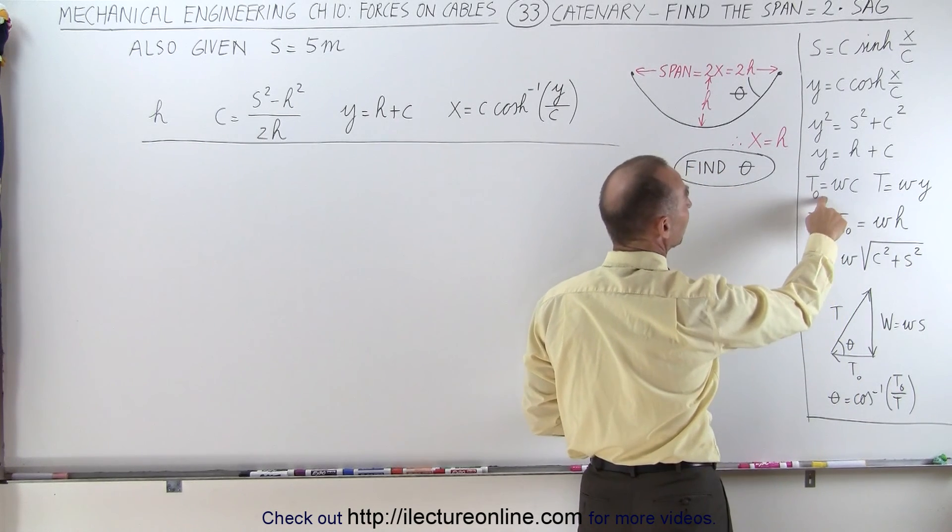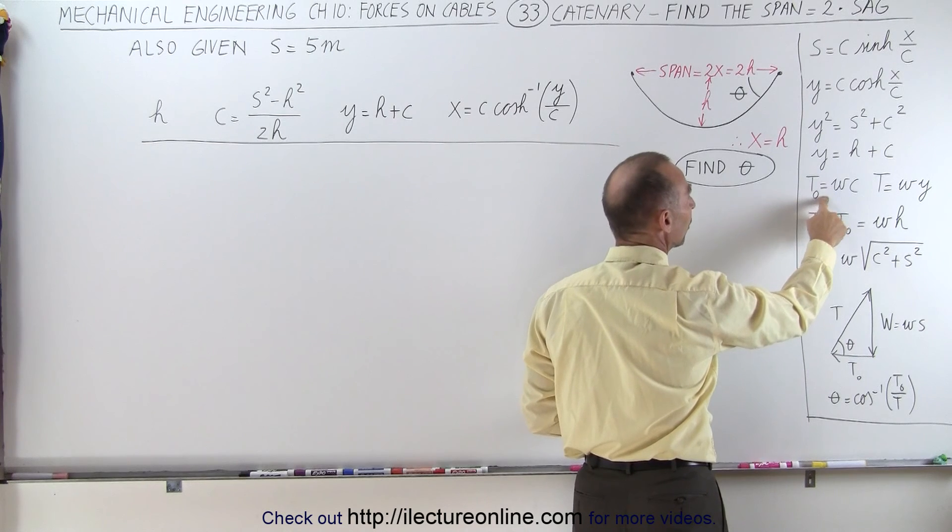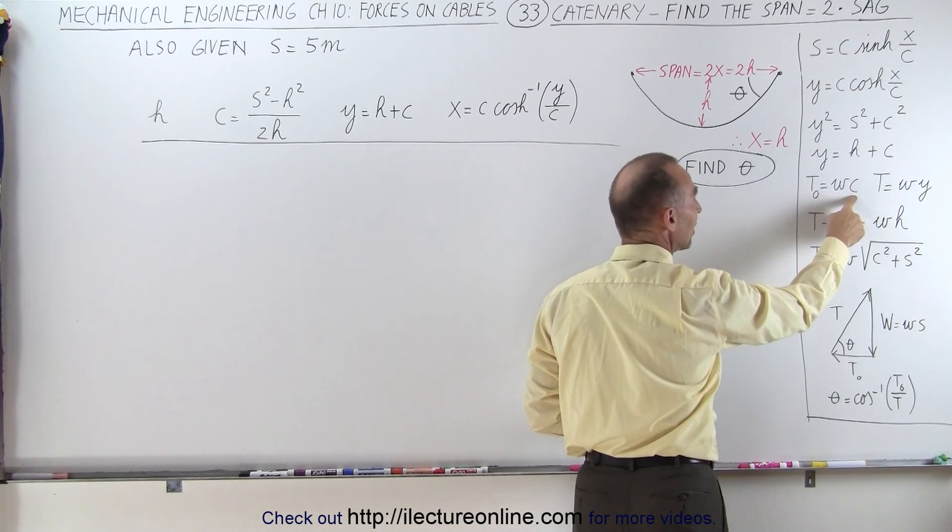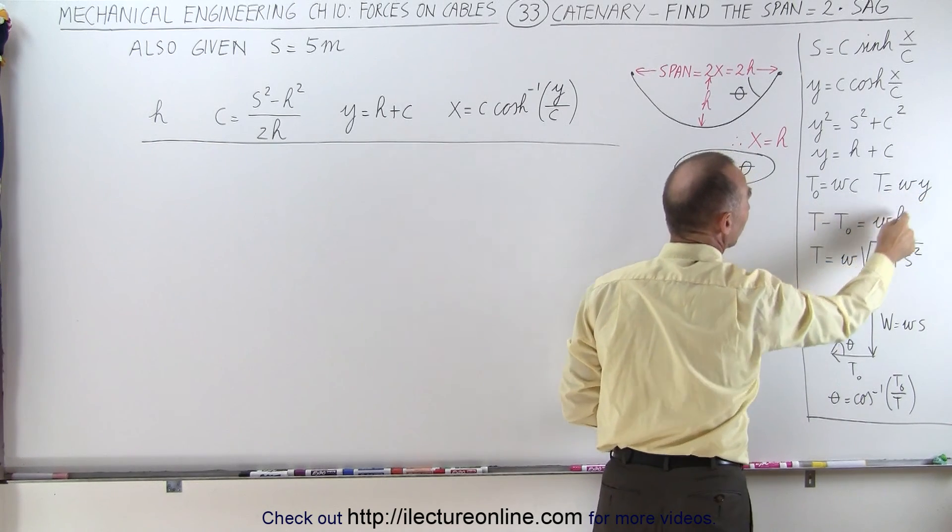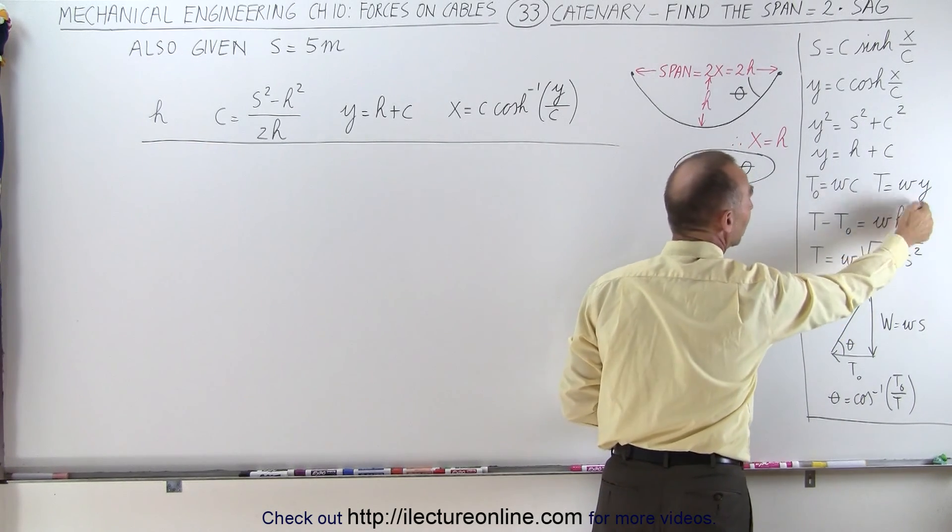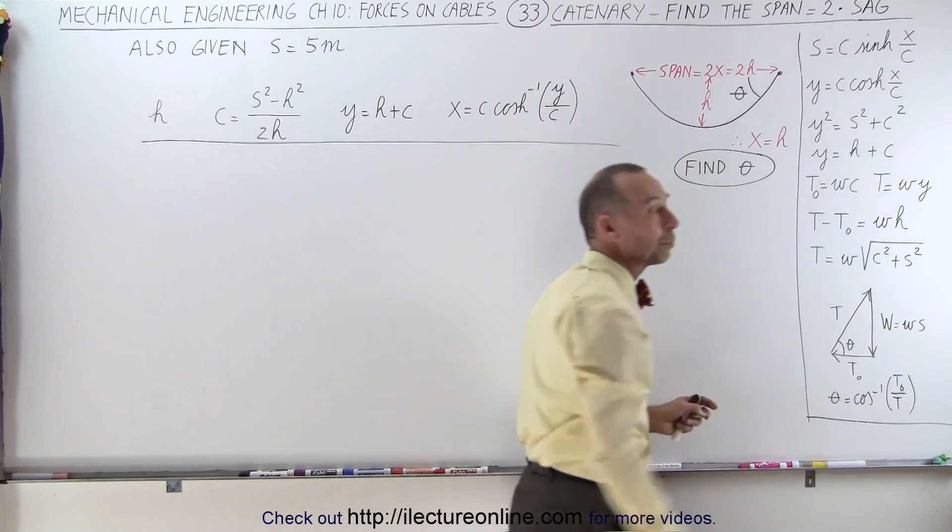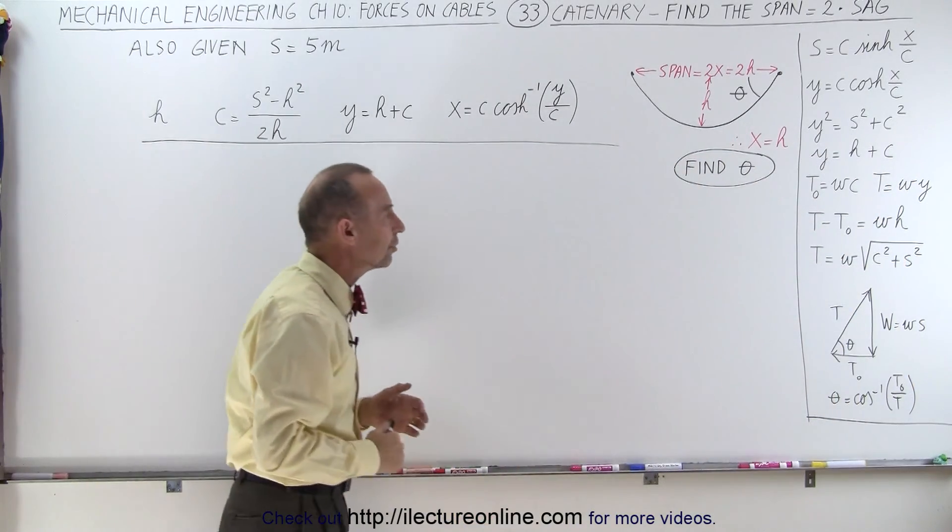Which means we need to find these two values. Coming up here we can see that the tension at the low point is the weight per unit length times c, and the tension at the attached point is the weight per unit length times y, which means we need to know c and y. When we take the ratio, the weight per unit length cancels out, we don't need to know that.